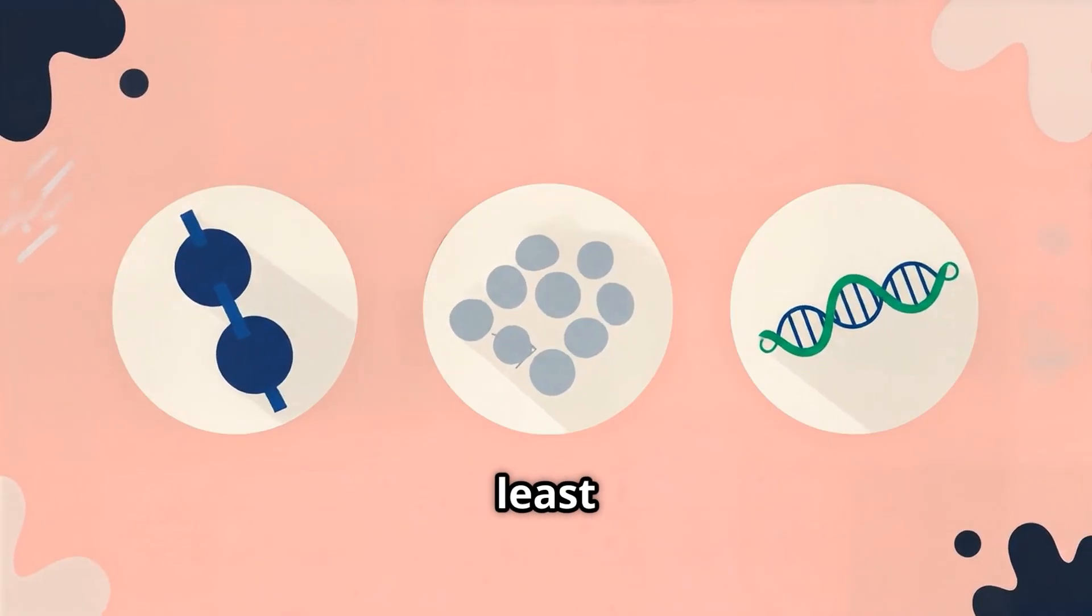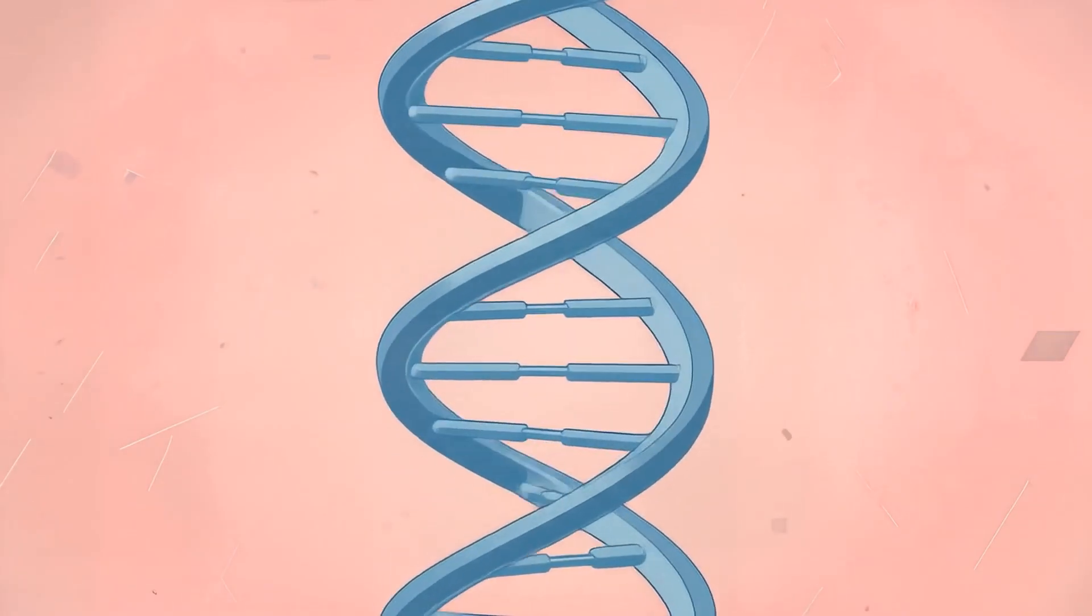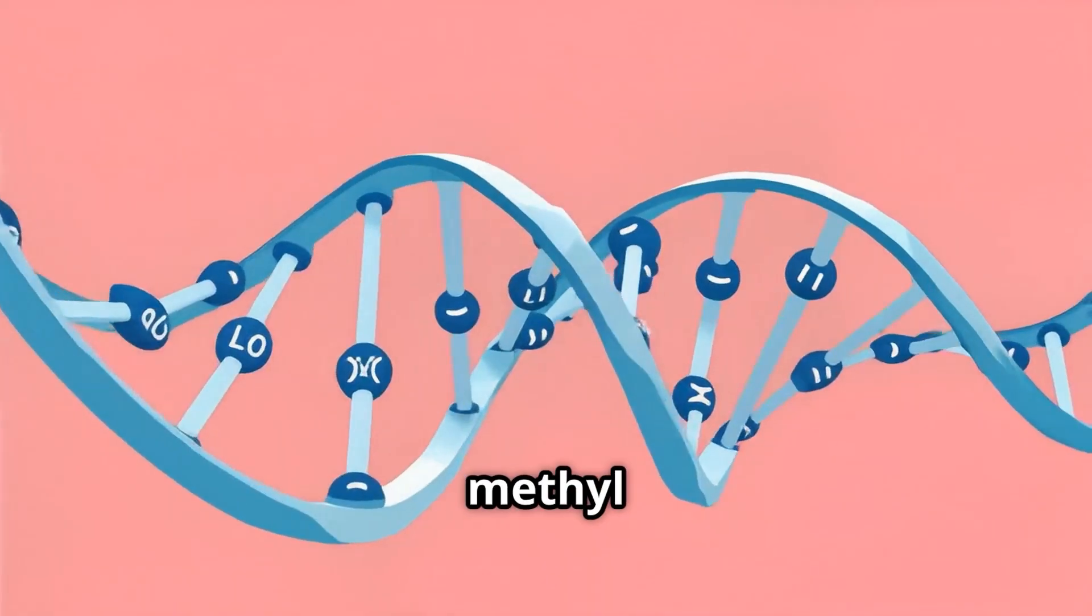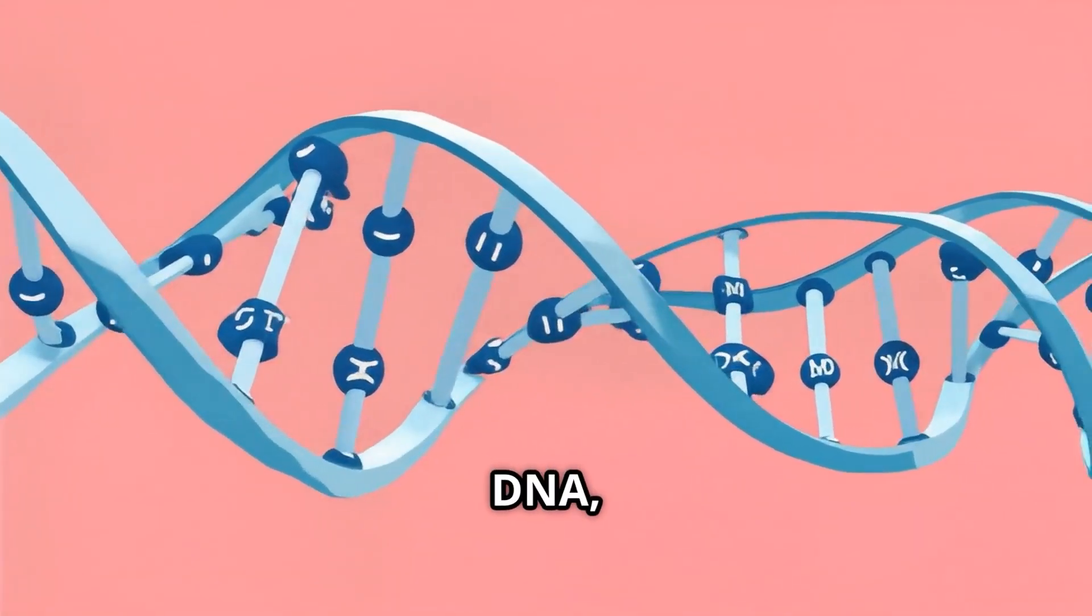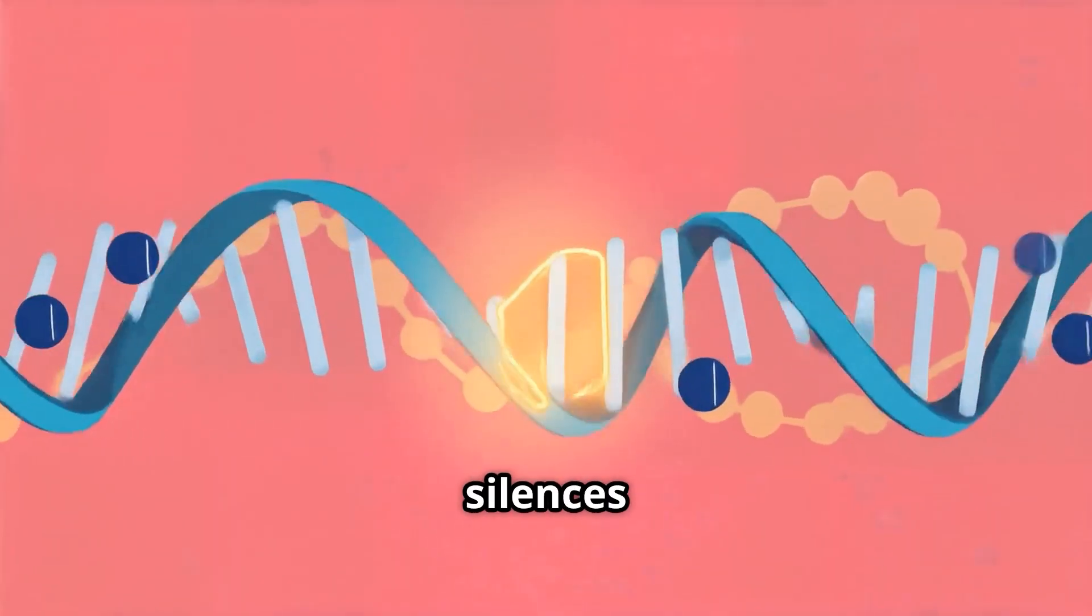Epigenetic changes can be caused by at least three mechanisms. First, DNA methylation: a methyl group, or CH3, is added to DNA, typically at cytosine bases. This usually silences gene expression.